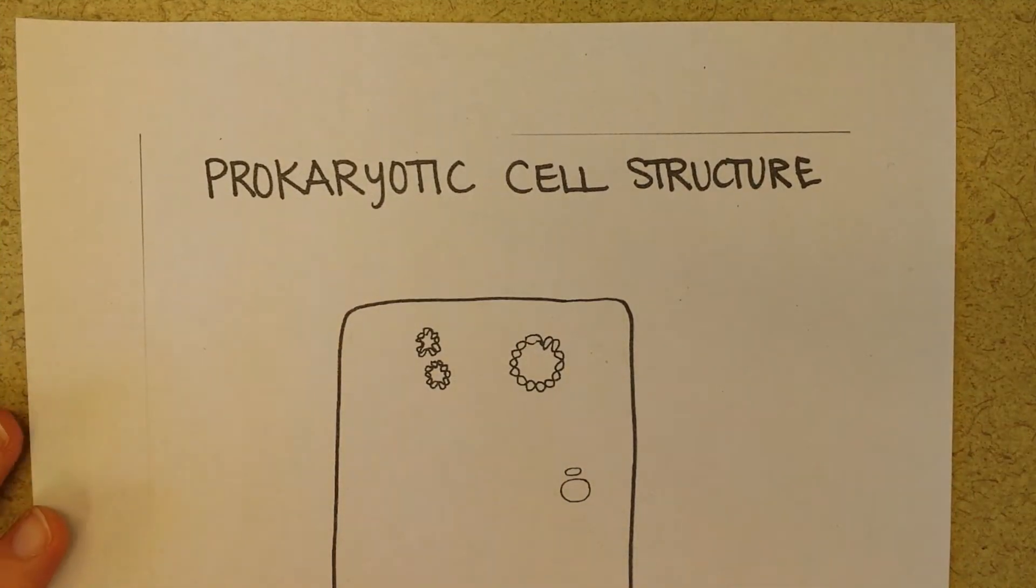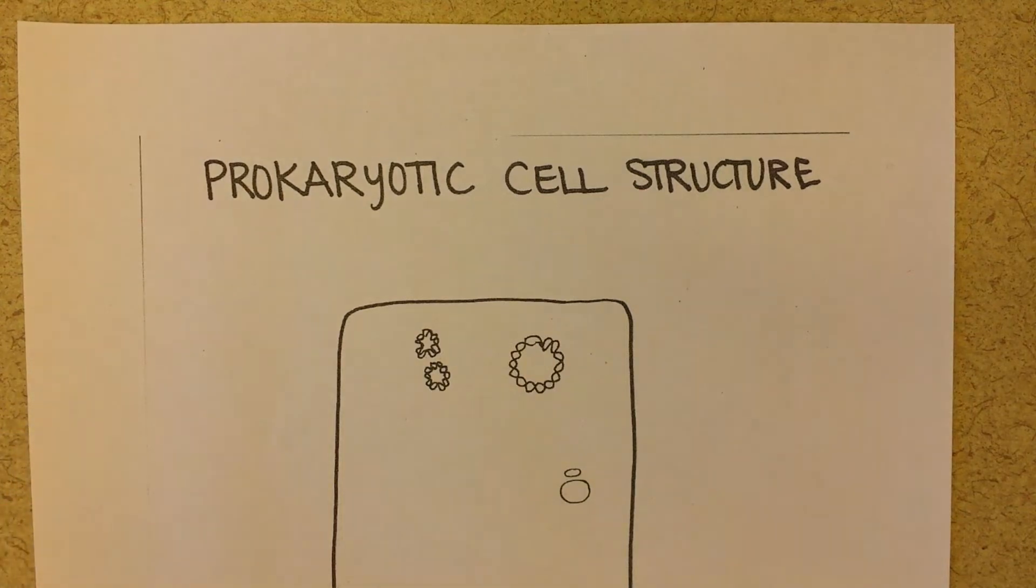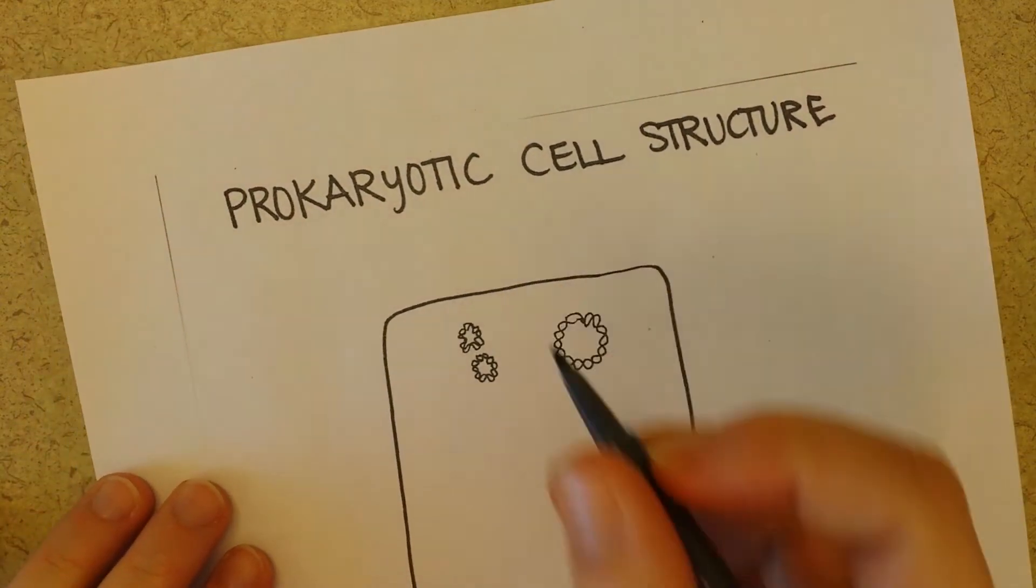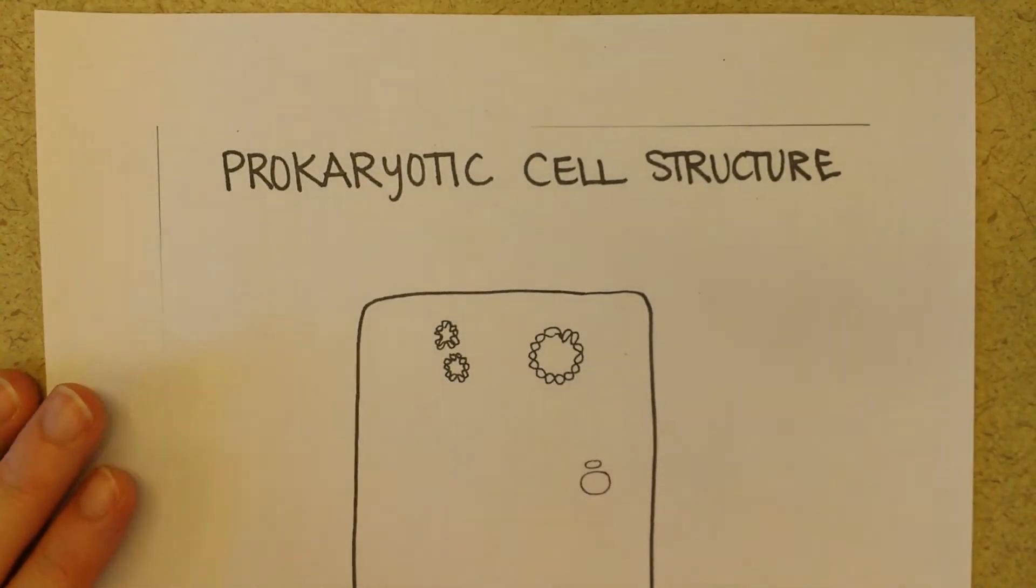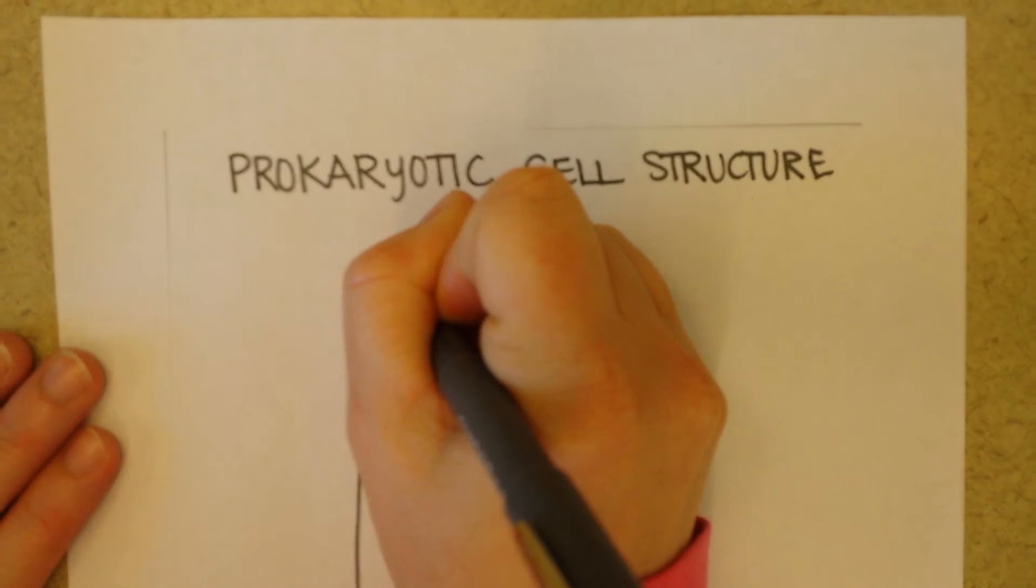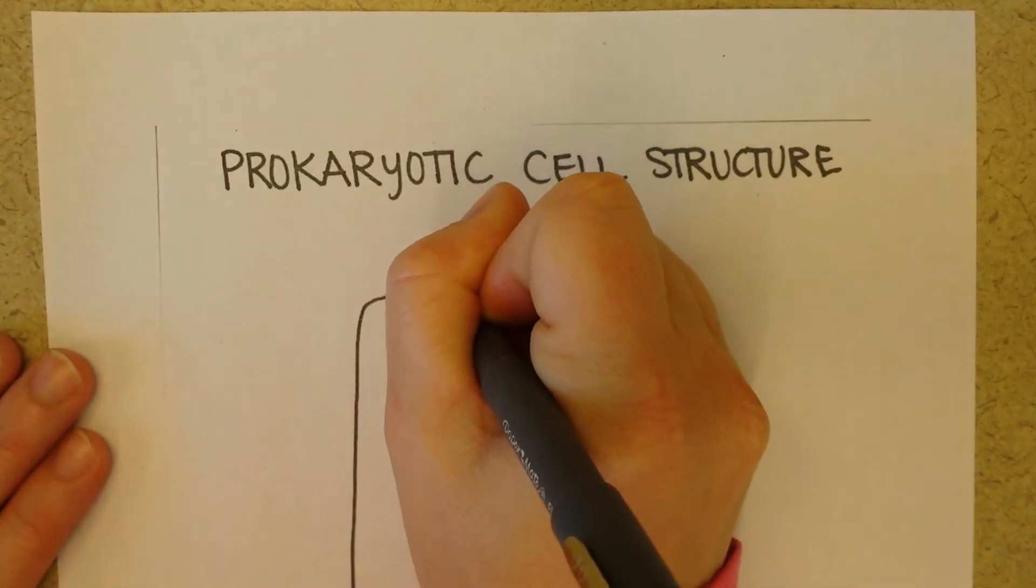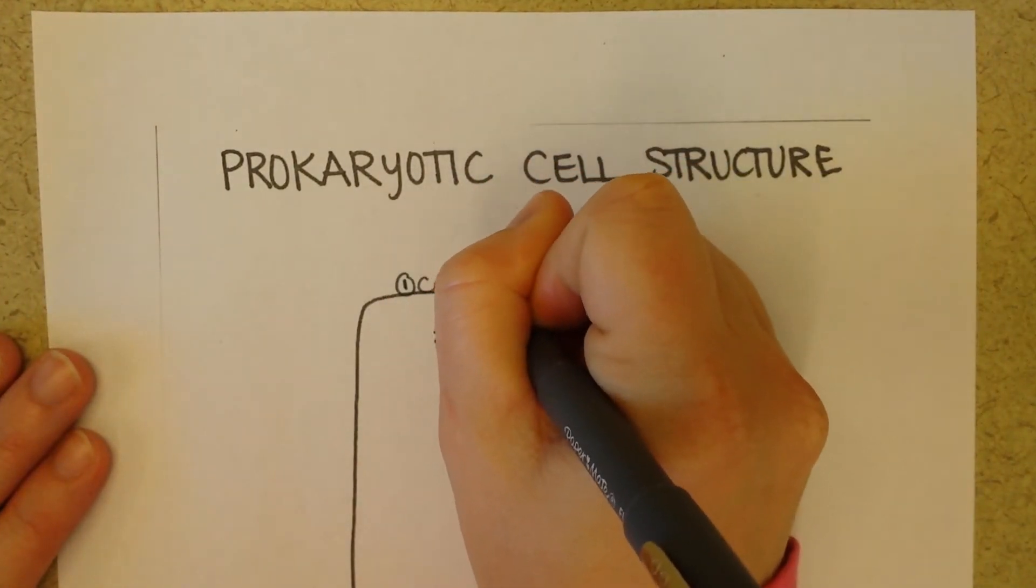Okay, let's talk about prokaryotic cell structure. We're going to start with the cell membrane. We'll just put a one on here for the first structure we'll talk about. Cell membrane.